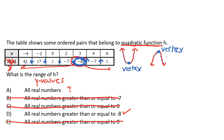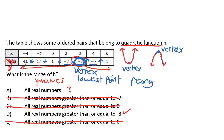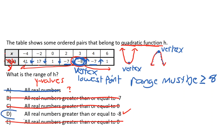Negative 8 is right in the middle between the negative 7s on each side, so it looks like negative 8 is our vertex. Since negative 8 is our lowest point, all of our range values must be greater than or equal to negative 8. So the answer is D: all real numbers greater than or equal to negative 8.